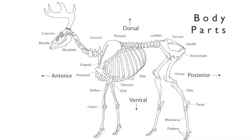Similarly, there are terms for segmenting and orienting parts within an animal's whole body. Using a deer skeleton as an example, anterior means towards the front, while posterior means towards the rear, dorsal means towards the back, and ventral towards the stomach. The axial skeleton includes the skull, vertebral column, ribs, and sternum, although some archaeologists treat the head separately. The appendicular skeleton includes the pectoral girdle or scapula along with the bones of the forelimbs, and the pelvic girdle consisting of various hip bones along with the bones of the hind legs.